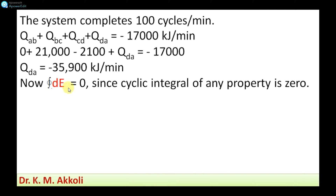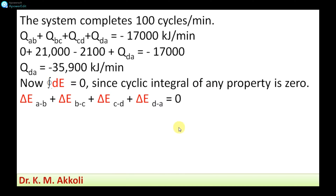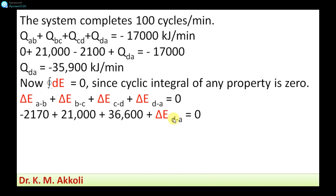Since internal energy is a property of the system, the cyclic integral of internal energy equals zero. Therefore, the summation of all internal energy changes over the cycle equals zero: delta E_AB plus delta E_BC plus delta E_CD plus delta E_DA equals zero. Substituting the known values: minus 2170 plus 21,000 plus 36,600 plus delta E_DA equals zero, so delta E_DA needs to be determined.